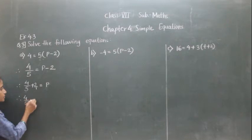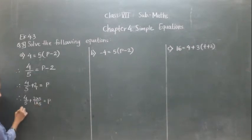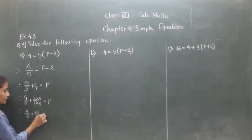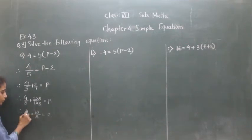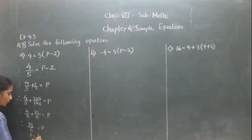So we write 4 upon 5 plus 2 upon 1, and make the denominator 5. 5 times 1 is 5, and 5 times 2 is 10. So we get 4 plus 10 upon 5, which is 14 upon 5. Therefore P is equal to 14 upon 5.